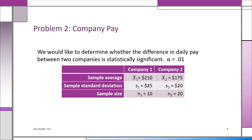In problem two, we want to know if the daily wages are different in two companies. We take a sample of 30 people: 10 from company one and 20 from company two. The average daily pay in company one was $210 but company two was $175. Before concluding that company one pays more, you're going to have to test the significance. You're noticing basically a $35 difference, but that could just very well be sampling error.